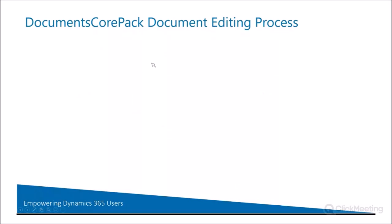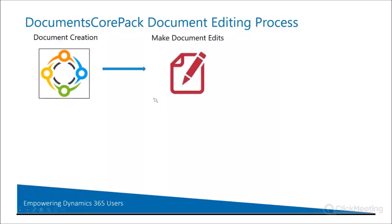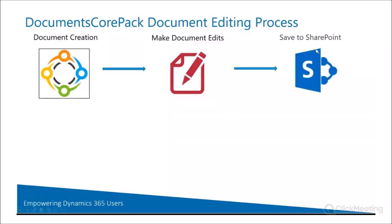So right now, if you're familiar with Documents Core Pack, if you've used it, you understand this process. If you haven't used it, this is kind of how it works. We do document creation through our Documents Core Pack dialogue. It lets you pick your different templates and your different parameters and things like that, and lets you go ahead and create that document from Dynamics Data via Documents Core Pack. It allows you then to make edits to your document, and then one of the options is to save to SharePoint. So this has been the flow for it right now — we're creating the document, making the edits, and saving to SharePoint.